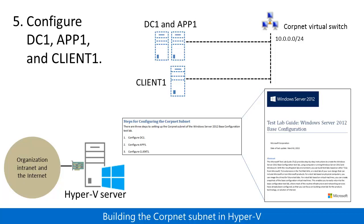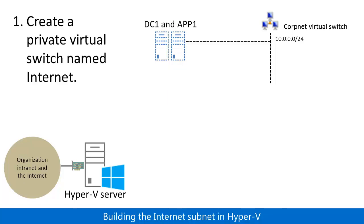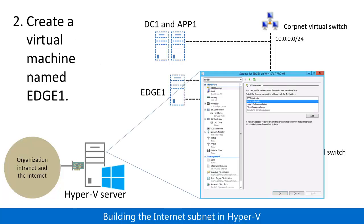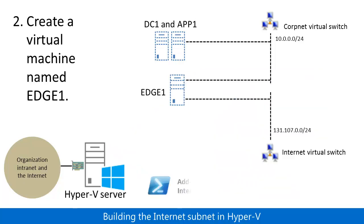The CorpNet subnet is complete. Now let's build out the Internet subnet. In step one, you create a private virtual switch named Internet. In step two, you create a new virtual machine named Edge1 that is connected to the CorpNet virtual switch. You then add a network adapter to Edge1 that is connected to the Internet virtual switch. You can do this in the Hyper-V Manager snap-in through the settings of the Edge1 virtual machine, or with the Add-VMNetworkAdapter Windows PowerShell cmdlet.